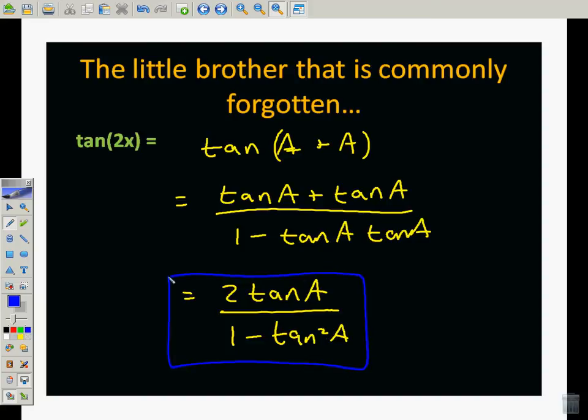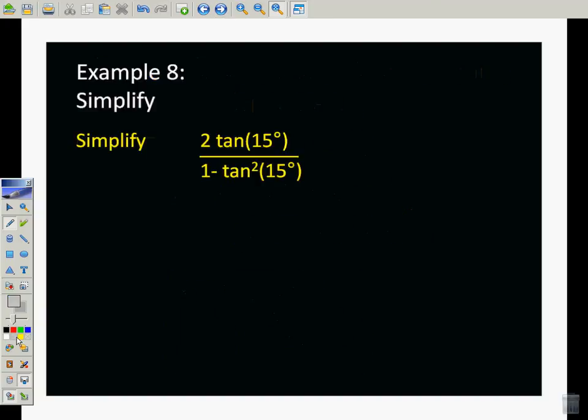We derived it from our angle addition formula that we know for tangent. So when we do one problem with this, we see that we have 2 times some angle over 1 minus tangent squared of that same angle. So really this is going to be the tangent of 2 times 15, because this is really a breakdown of the double angle formula. So that's the tangent of 30, which we find from the unit circle to be 1 over the square root of 3.